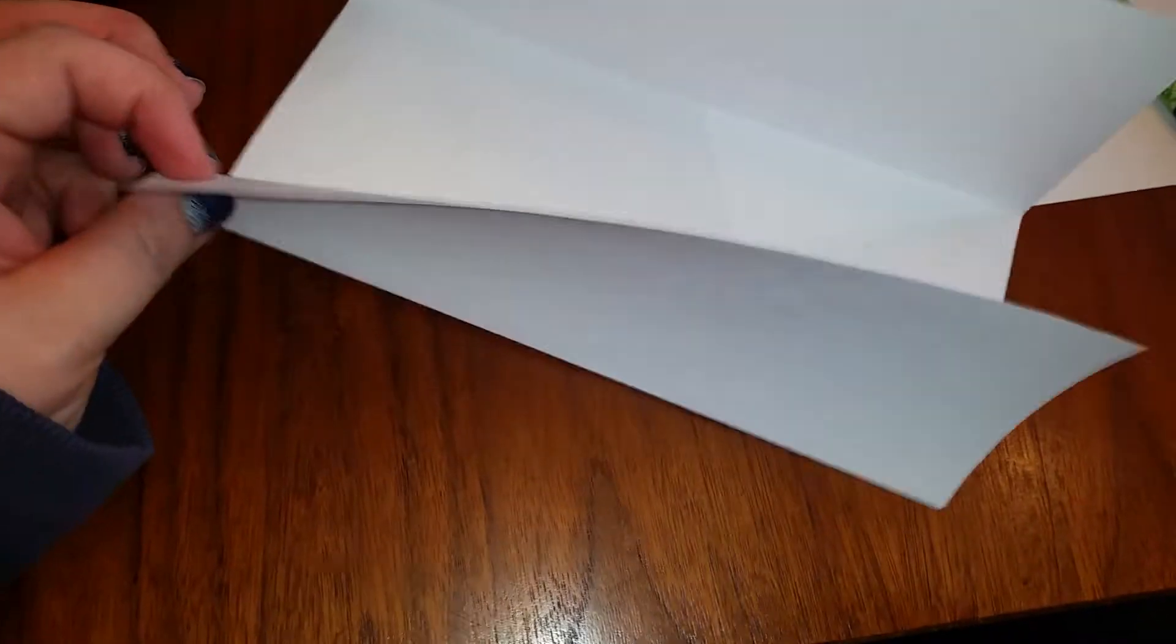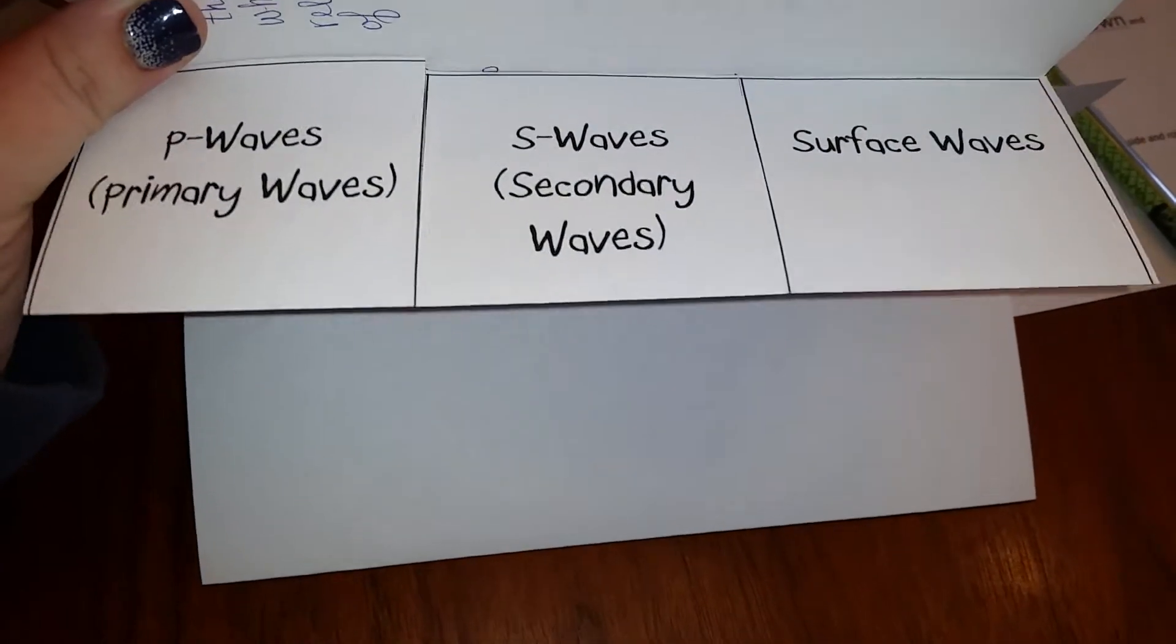Open it up and on this flap—this one that's towards you that's completely blank—you're going to make it into three separate sections that are P waves, S waves, and surface waves.